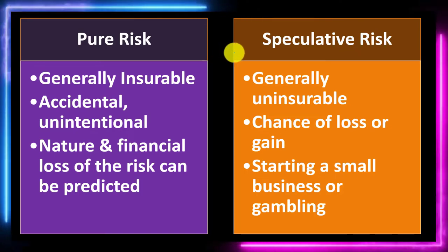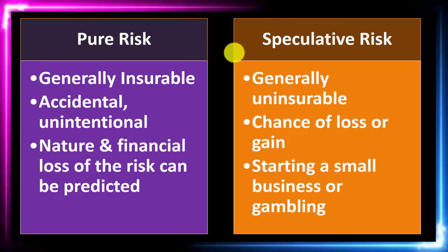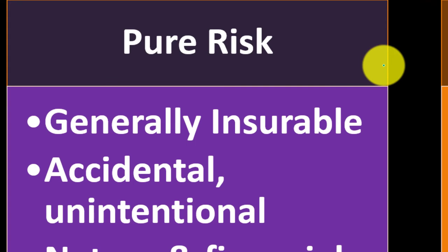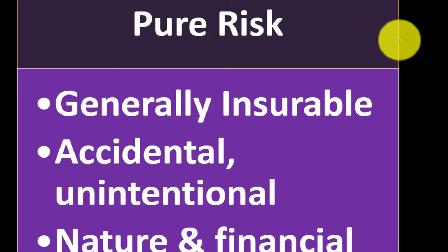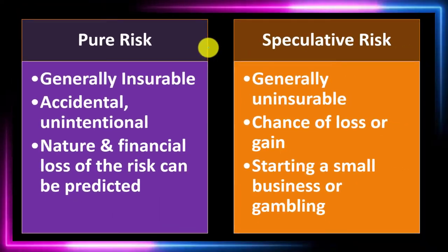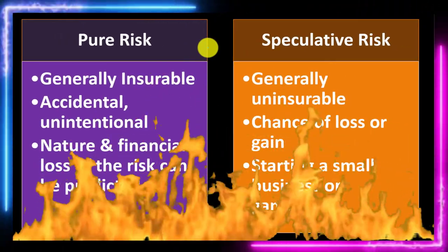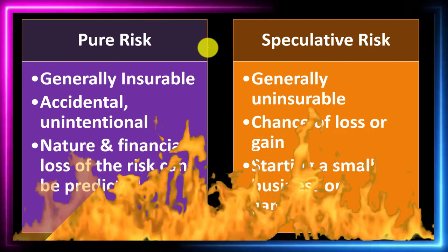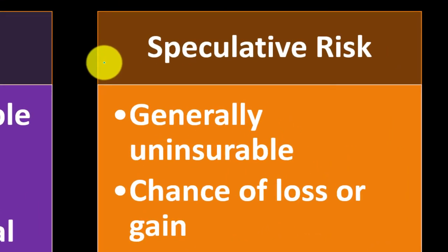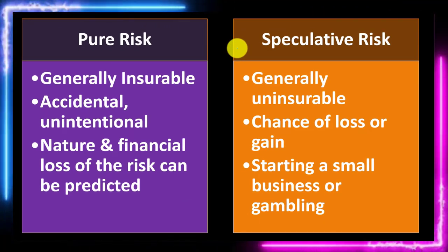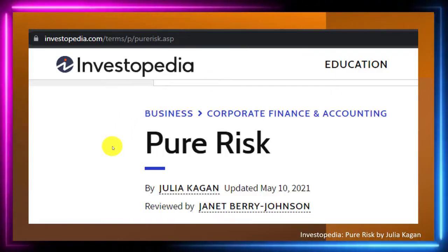We have the concepts of pure risk and speculative risk. Pure risk is typically the type that is insurable, whereas speculative risk is generally not. Pure risk involves situations where either nothing happens and you're okay, or something happens and you have a loss — there's only downside. For example, a fire either doesn't happen or it does and you lose. Speculative risk means you could have a gain or a loss, such as starting a business or gambling.